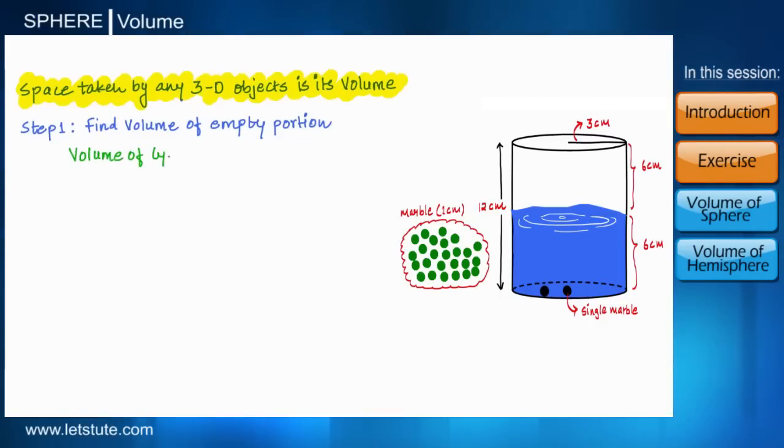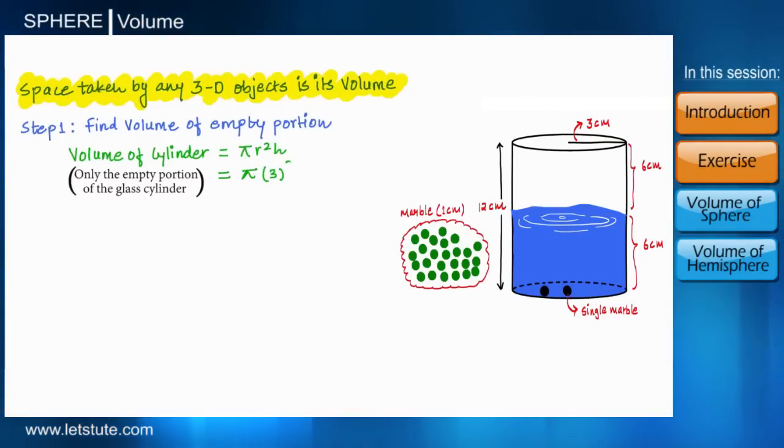So let's do it one by one. We know that the volume of cylinder is calculated by the formula πr²h, where r is the radius and h is the height. Here radius of the glass is 3 centimeter and the height of the empty portion is 6 centimeter. So by putting the values of parameter into the formula, we will get 54π centimeter cubed.